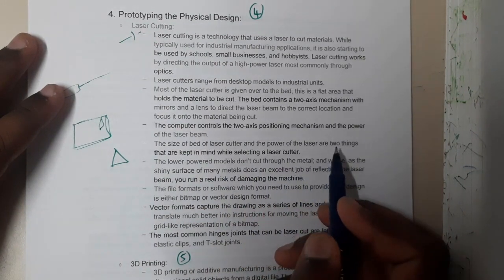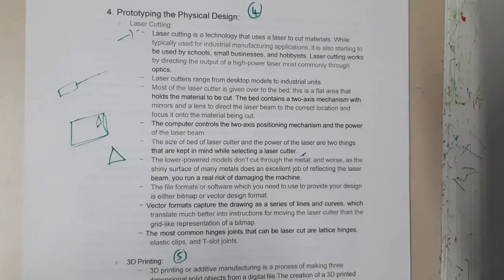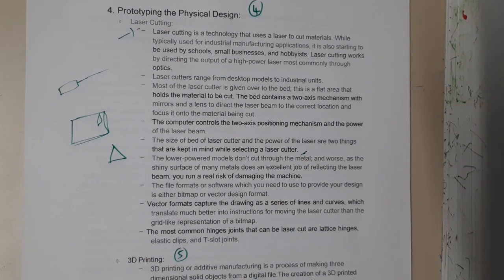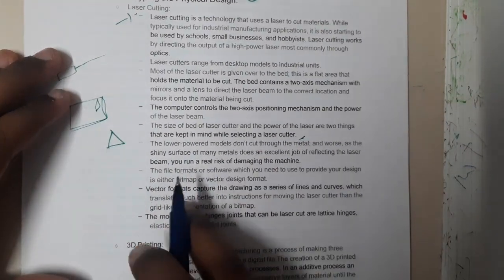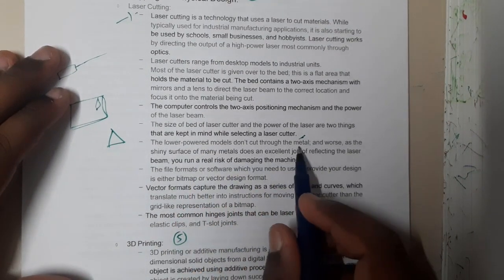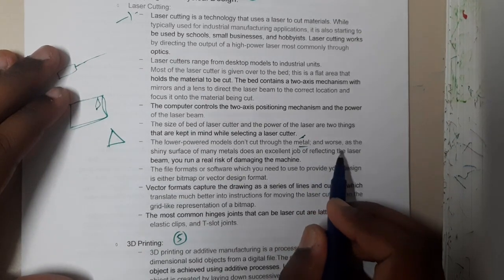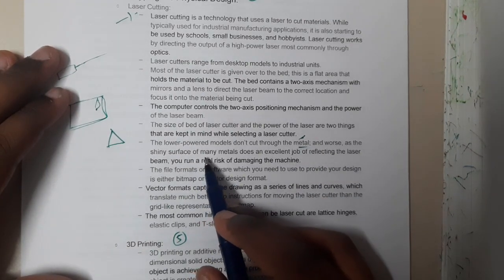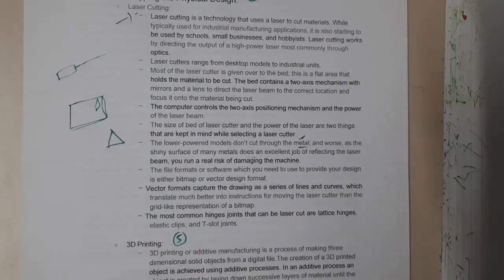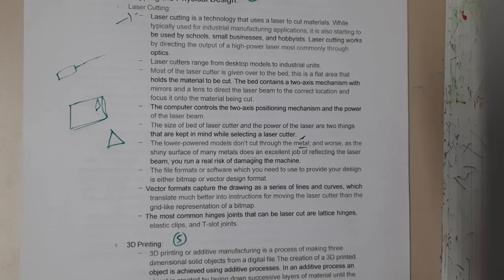The bed size and the power of the laser are two key things to keep in mind. If you set the power too high and pass a paper through, it will burn. Lower-powered models cannot cut through metal, and shiny or smooth metal surfaces are also a disadvantage for lower-end machines.